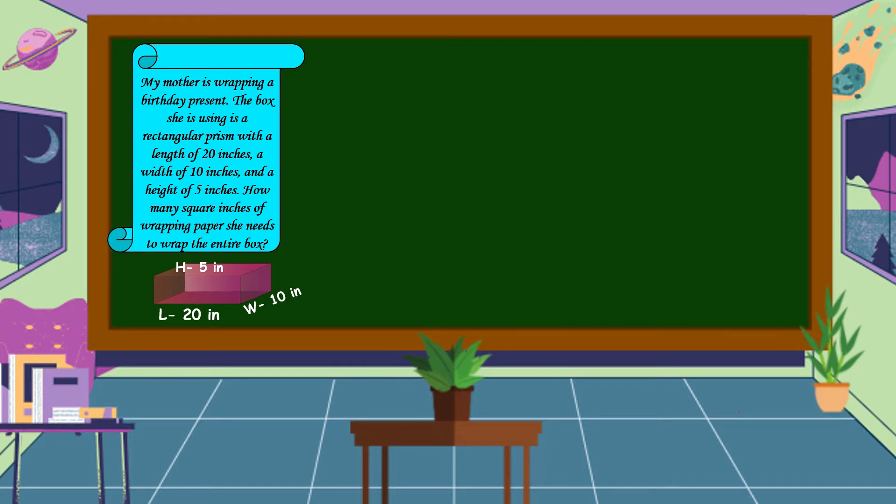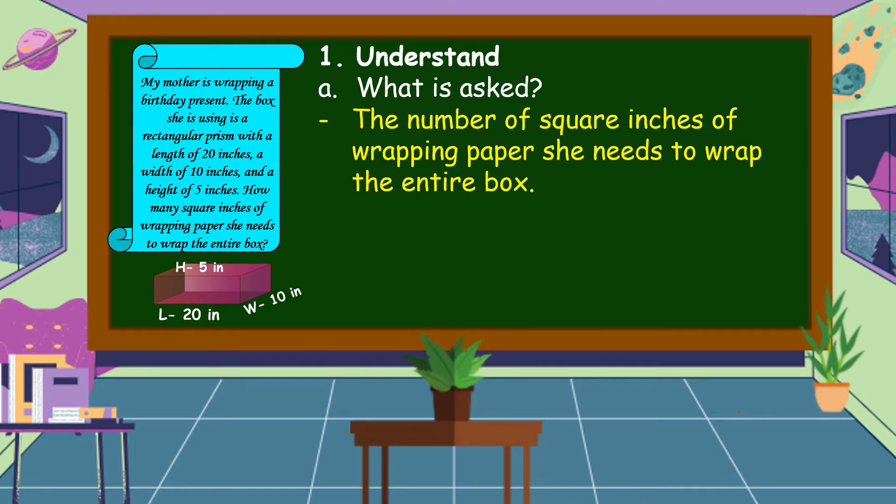What is the first step? Fantastic! The first step is we are going to understand the problem. What are the things that we should know? We should know what is asked. In this problem, it is asking for the number of square inches of wrapping paper she needs to wrap the entire box.